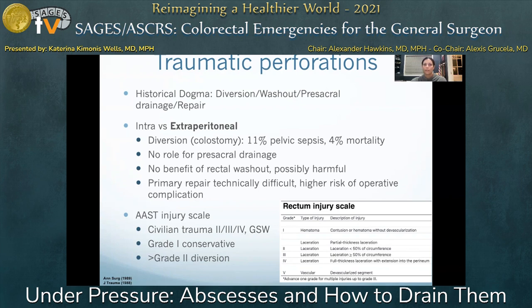The AAST grading scale for rectal trauma, when applied to the civilian population, supports conservative management of grade 1 injuries, with more aggressive measures resulting in increased morbidity. This conservative approach is associated with 0% mortality and 15% morbidity. However, the majority of civilian rectal trauma is grade 2, 3, or 4 secondary to penetrating trauma, with those injuries requiring at least relaparotomy and diversion, resulting in a mortality rate of 4% and morbidity of 3%.